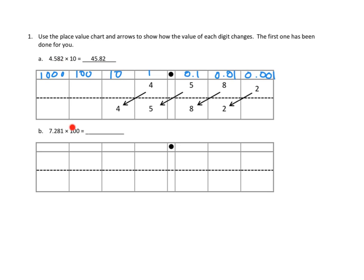5 tenths becomes 5 ones, and 8 hundredths becomes 8 tenths, and 2 thousandths becomes 2 hundredths. They slid those all out. So that's when you multiply by ten. I'm going to leave it for you to label the diagram for 1b. You'll decide where to insert the number 7.281 and what happens when you multiply by a hundred.